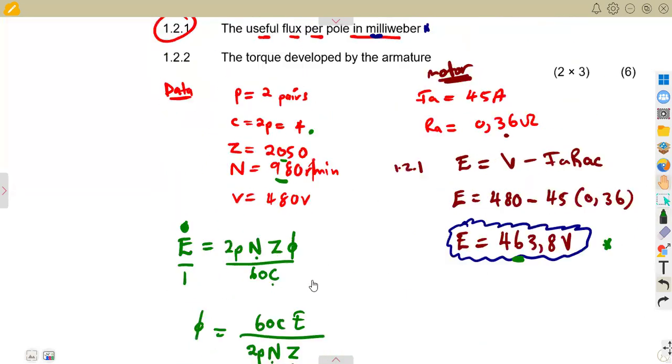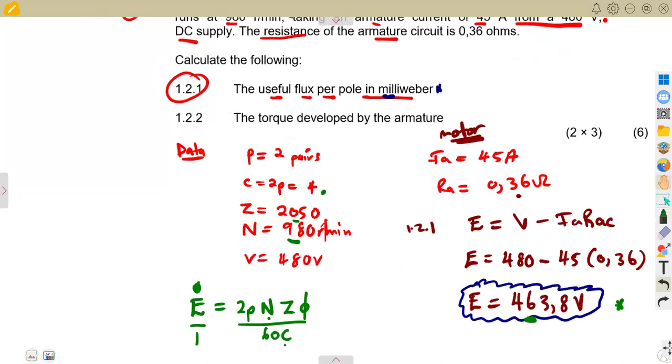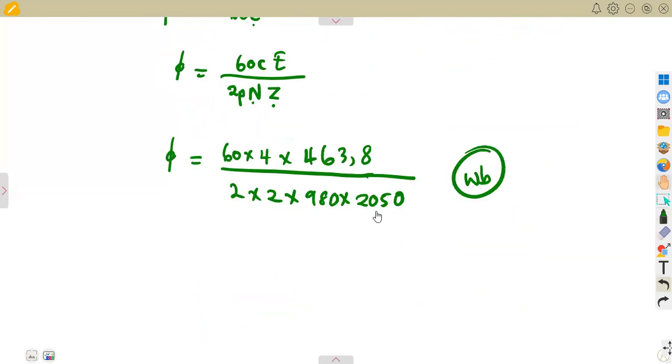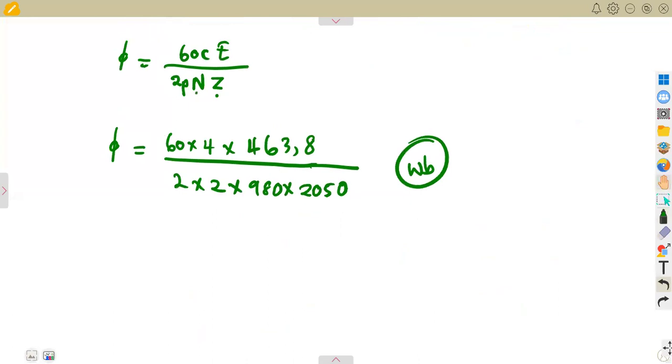This was going to give us the useful flux in webers, but because they gave us an instruction in milliwebers, simply to convert to milliwebers this is what you're going to do. You simply multiply by the opposite. Remember, milliwebers means times 10 to the exponent of minus 3 webers. So the opposite, you use a plus when you want to convert to milliwebers.